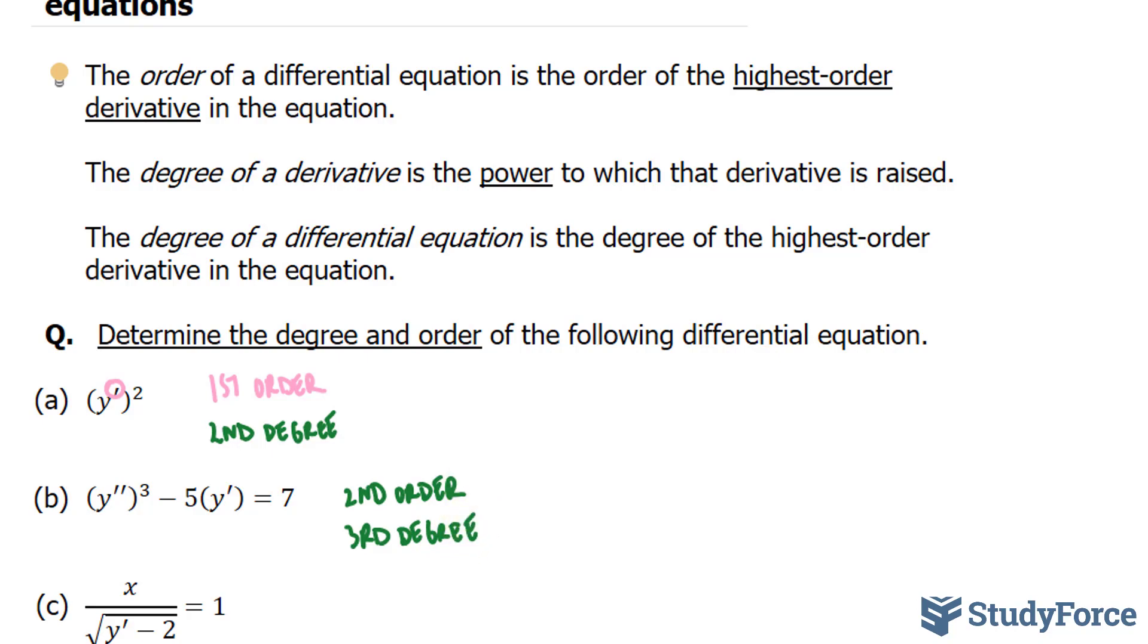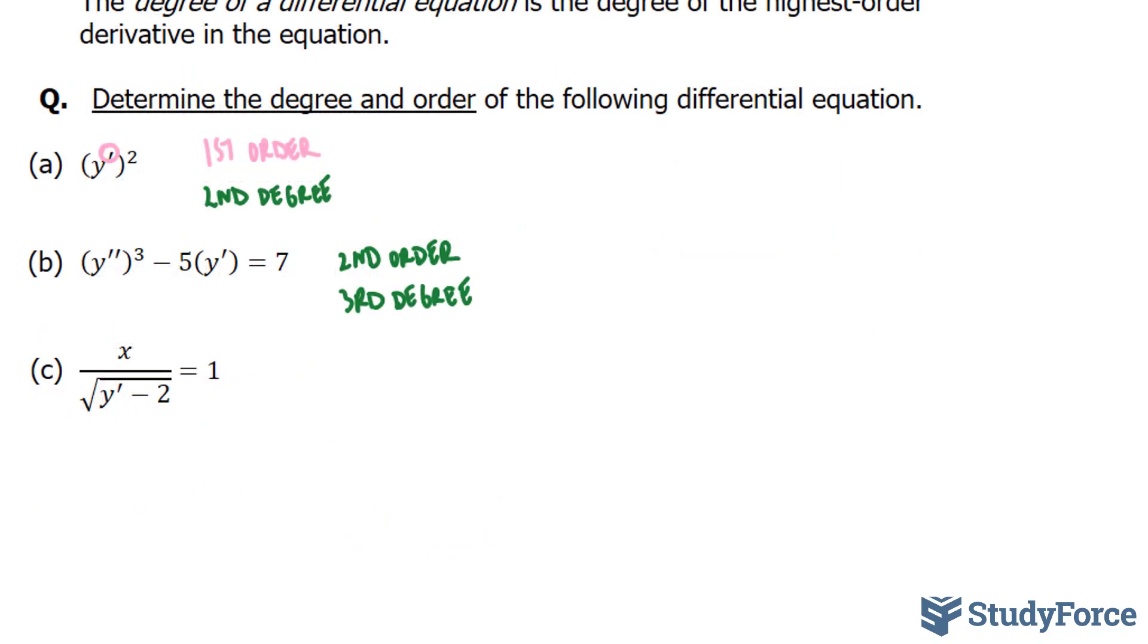And finally, in question C, notice that this equation contains a fraction. To find the degree of a differential equation, we clear the fractions before we determine what it is. So let's try to clear the fractions by multiplying both sides by the square root of what's in the denominator. And if I do that, I have x is equal to 1 times the denominator, which is the square root of y prime minus 2.